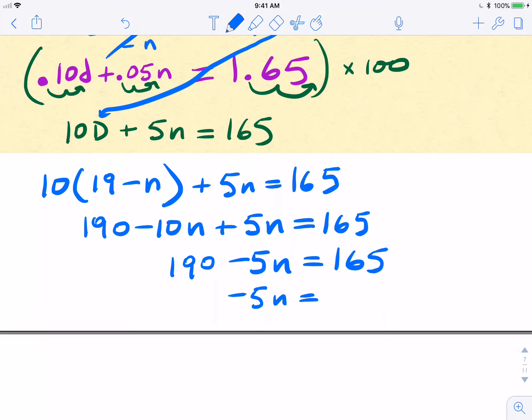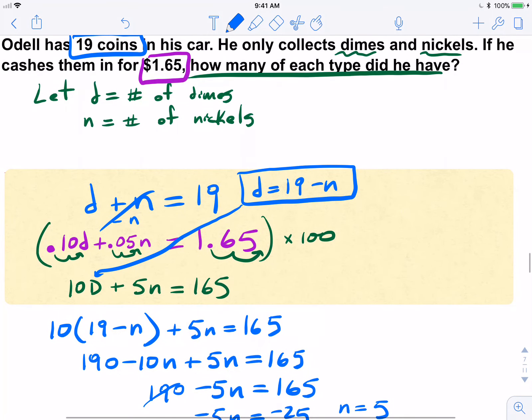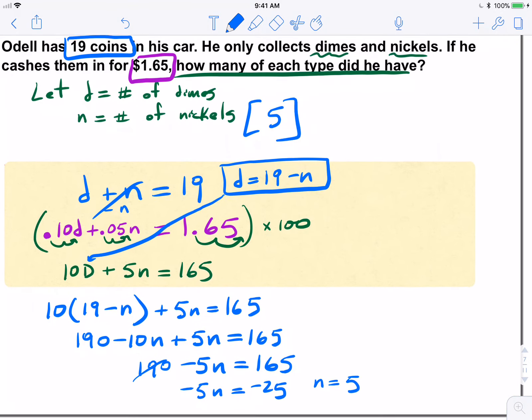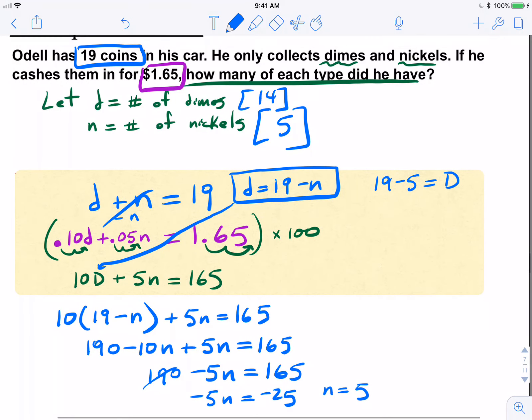And that is negative 25. I'm going to subtract the 190. So I get N equal to, if I divide by negative 5, 5. Meaning I have 5 nickels in this scenario, Odell has 5 nickels, which means if I plug in for N, 19 minus 5 gives me my variable D. And 19 minus 5 is 14.